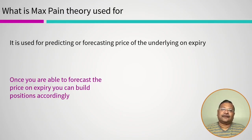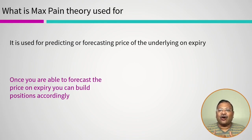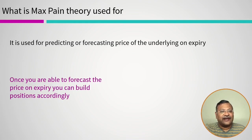What is max pain theory used for? Like I mentioned, it is used for predicting or forecasting the price of the underlying on expiry. Traders use it to predict what the price of the underlying is going to be on expiry, and once you are able to forecast that price, you can take your positions accordingly.